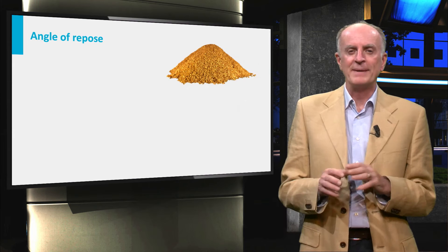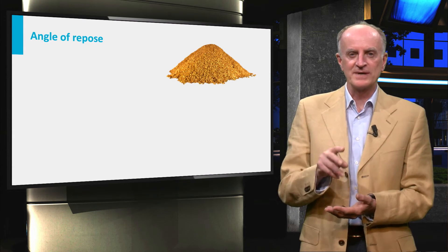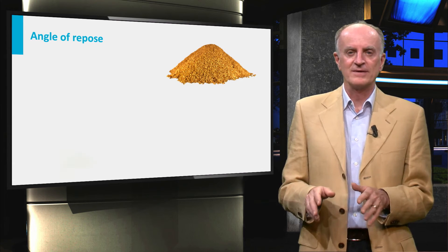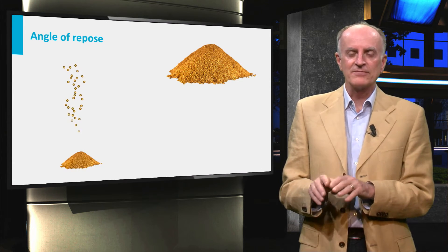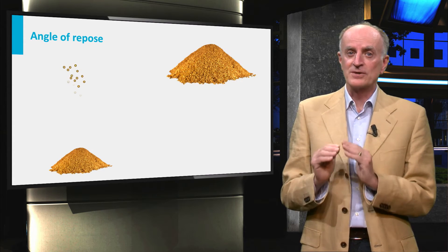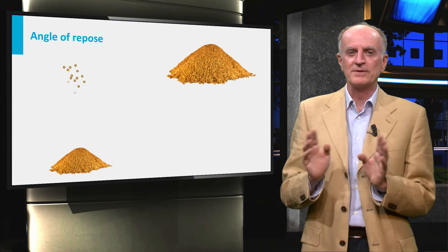The process of falling and piling up can be best understood looking at what happens to sand grains which continuously fall on a flat surface. Falling grains will start forming a small cone which will grow in size. Interestingly, it will grow but the angle of the cone will remain constant throughout the process.